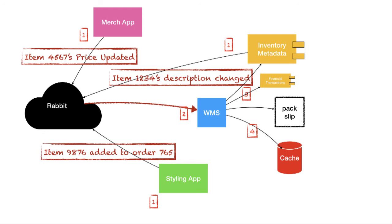We've introduced three new ways to break this entire process. The problem is that with synchronous calls, if that breaks, it's pretty loud and obvious. But if these messages cause something to not work, it's not obvious. You could imagine the price updated event gets sent to a different topic or routing key and it just never gets to the warehouse management system — we'll never know that. What if messages are missing data and the warehouse management system ignores them? We could potentially never know that this thing is broken.